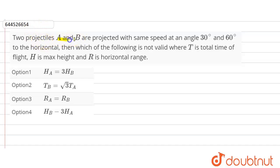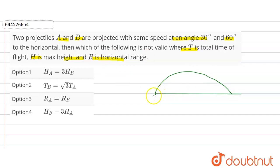Two projectiles A and B are projected with the same speed at angles 30 degrees and 60 degrees to the horizontal. We need to find which of the following is not valid, where T is the total time of flight, H is the maximum height, and R is the horizontal range. This is our ground surface; one projectile is projected at 30 degrees and another at 60 degrees, both with speed u.